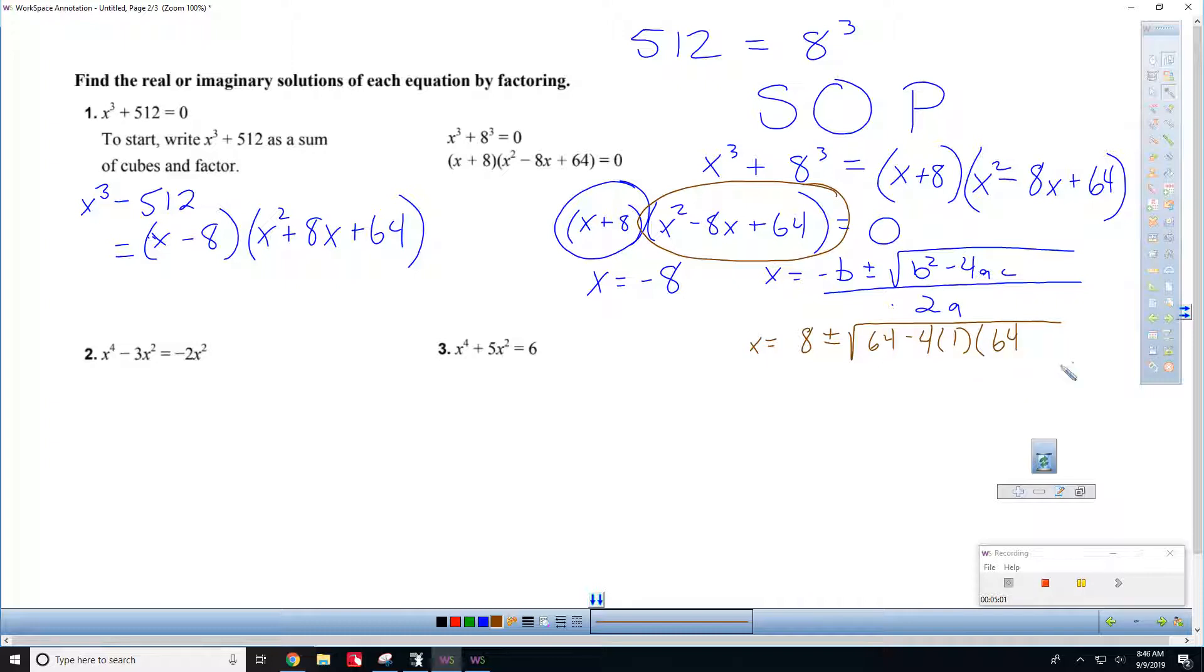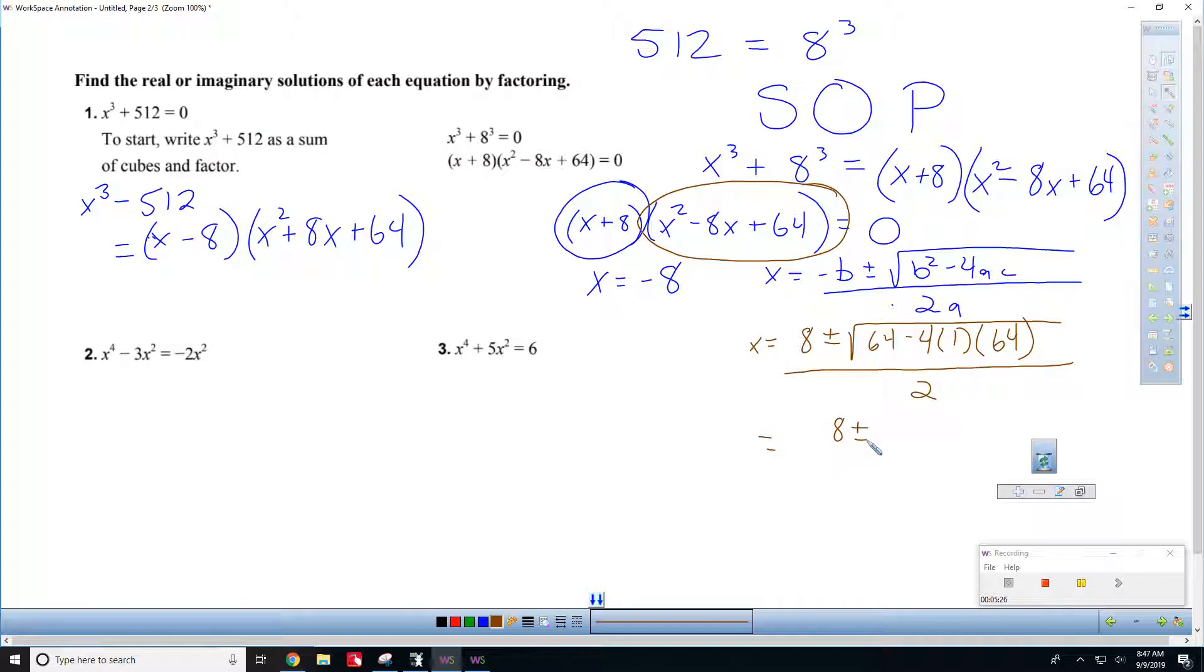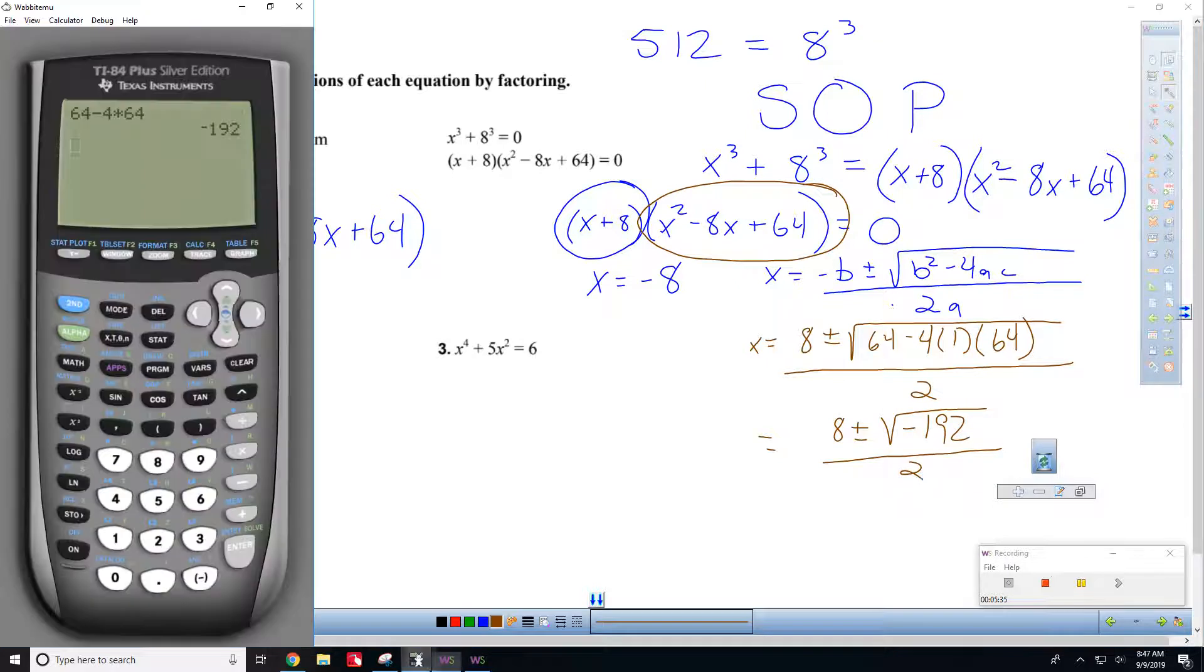So, x equals 8 plus or minus big square root of b squared is 64 minus 4 times 1 times 64 all over 2 times 1. So, what is 64 minus 4 times 64? 64 minus 4 times 64. So, you get 8 plus or minus a radical negative 192 over 2.